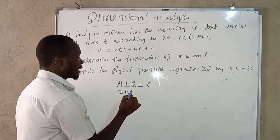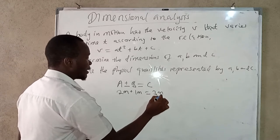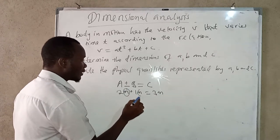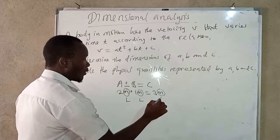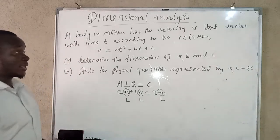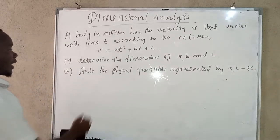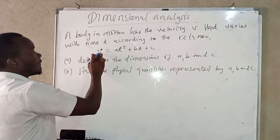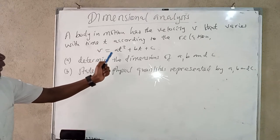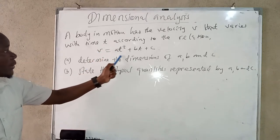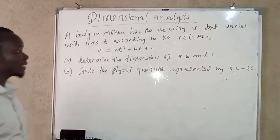For example, two meters plus or minus one meter gives three meters — all the same quantity. In terms of dimensions, each term is L. This is the same scenario for our equation. We have v = at² + bt + c, and since all terms must have the same dimensions, this one, this one, and this one are dimensionally equivalent.